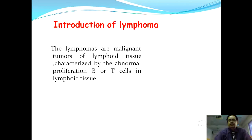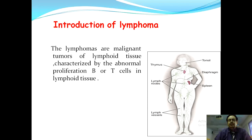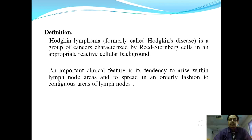Overall, lymphomas are malignant tumors of the lymphoid tissue characterized by the abnormal proliferation of B or T cells in the lymphoid tissue. In the diagram, the lymphoid tissues above the diaphragm include tonsils, thymus, and lymph nodes in the mediastinum, and similarly there are lymph nodes in the lower limbs below the diaphragm.